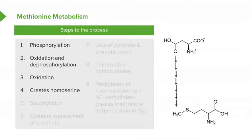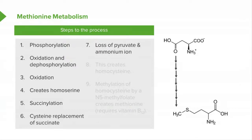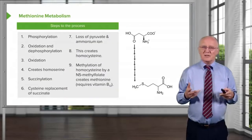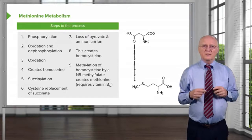This process creates homoserine. Homoserine was an intermediate in the synthesis of cysteine from methionine. Succinylation involves the addition of a succinate molecule, and cysteine replaces the succinate in the next step. There is then loss of a pyruvate and an ammonium ion to produce homocysteine. Homocysteine is the molecule whose concentration is a problem in the production of cysteine. Finally, methylation of homocysteine by N5-methylfolate creates methionine — the reaction that requires vitamin B12.